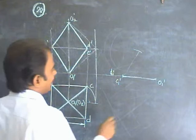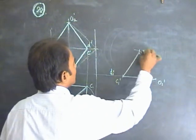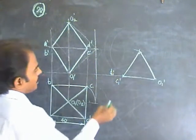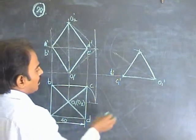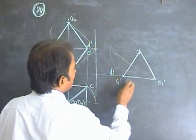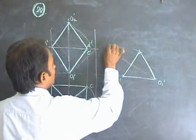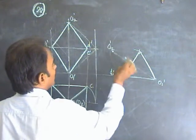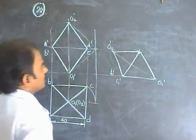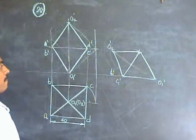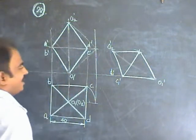Take this slant distance and cut from here. You will be getting this shape. Then, to obtain O2 dash, take this distance and place it at the other end — you will get O2 dash. Now O2 dash is positioned in its new position, where one of its triangular faces is on the HP.